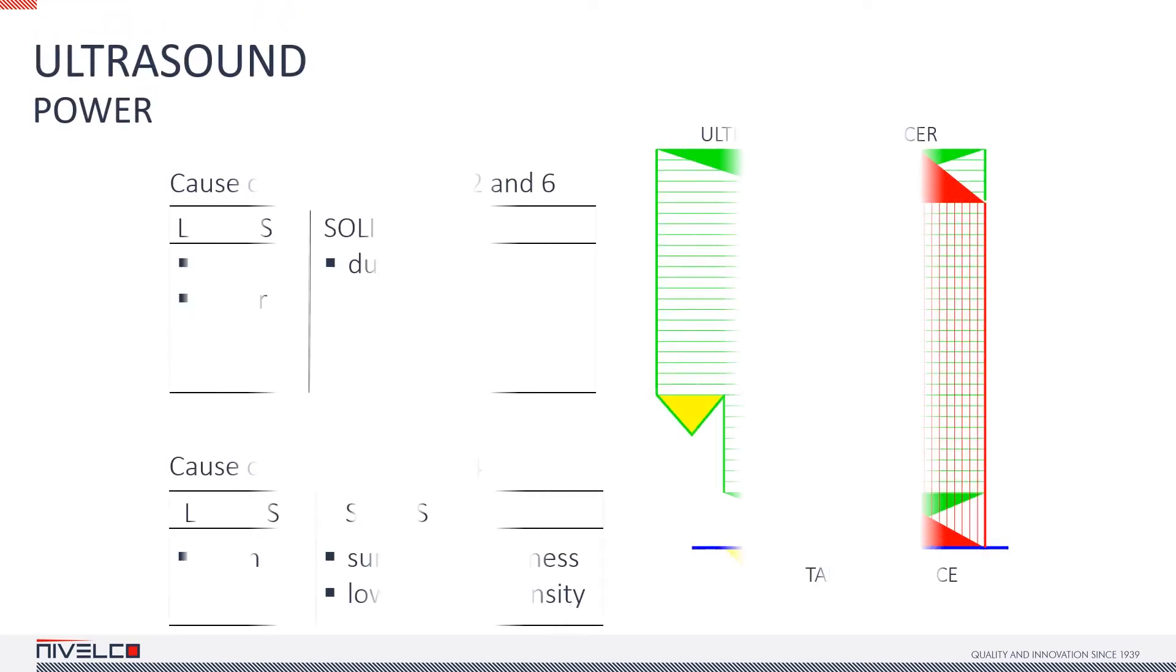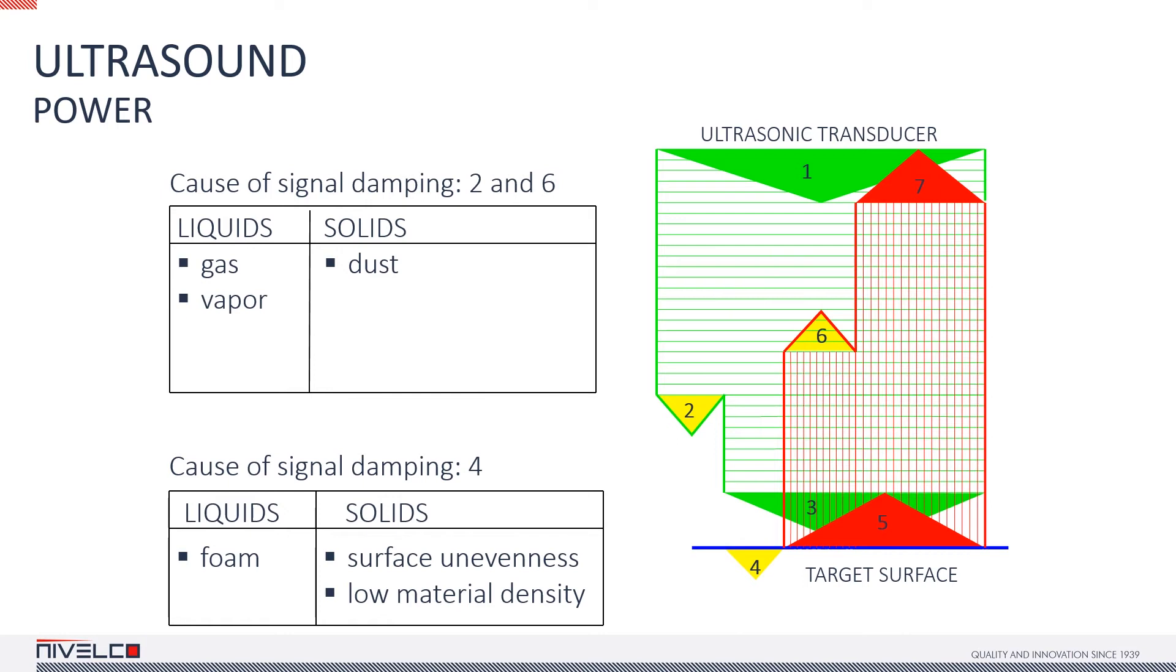Arrow 2 and 6 may be caused by gas or vapor above liquids or dust above solids, while arrow 4 is caused by foam on liquids or solids with an uneven surface or low density.